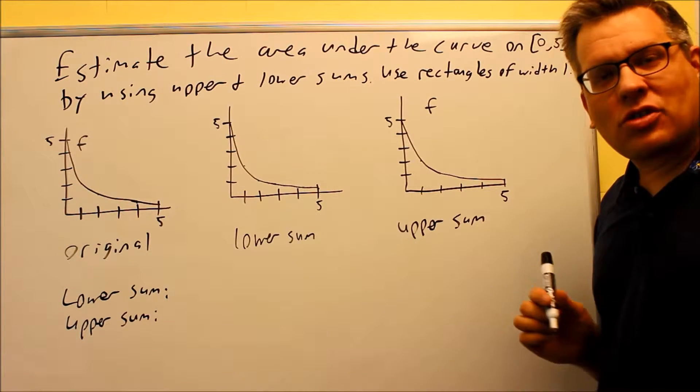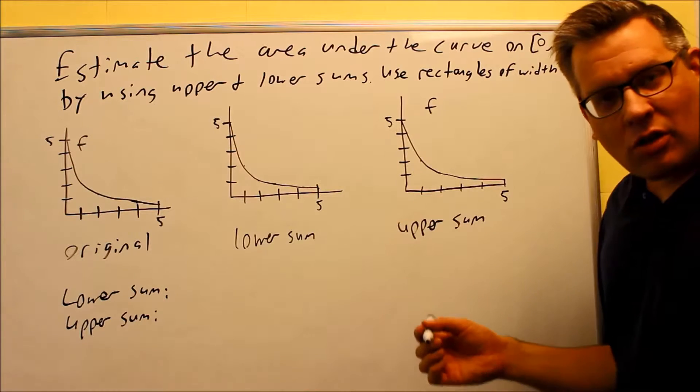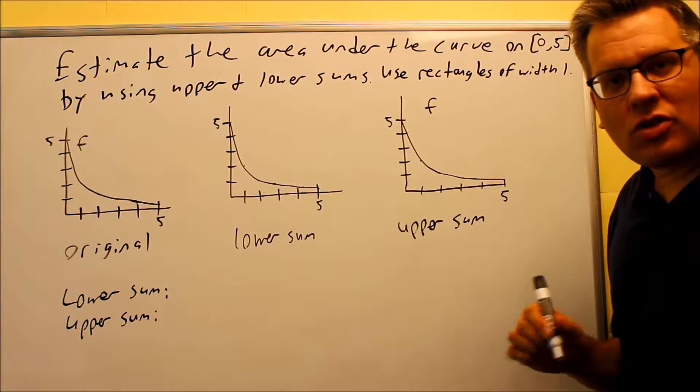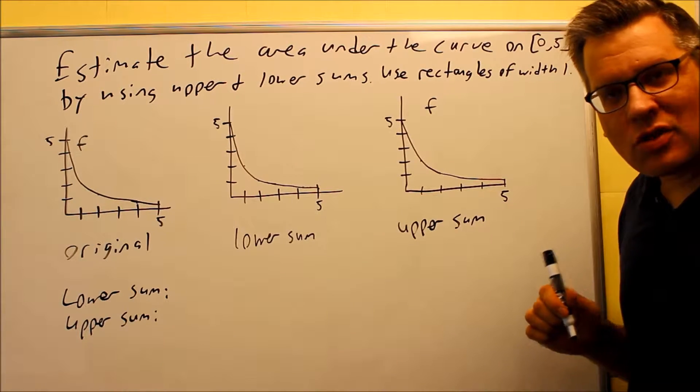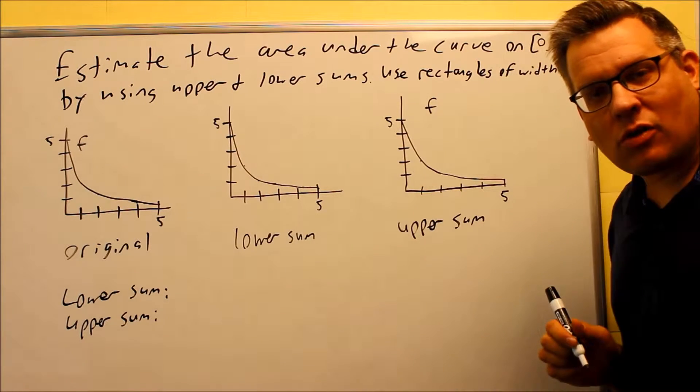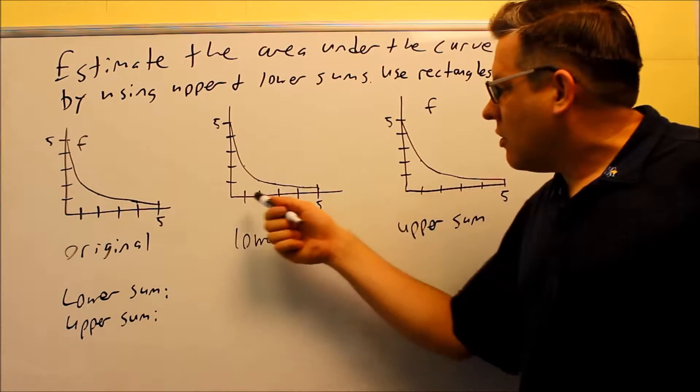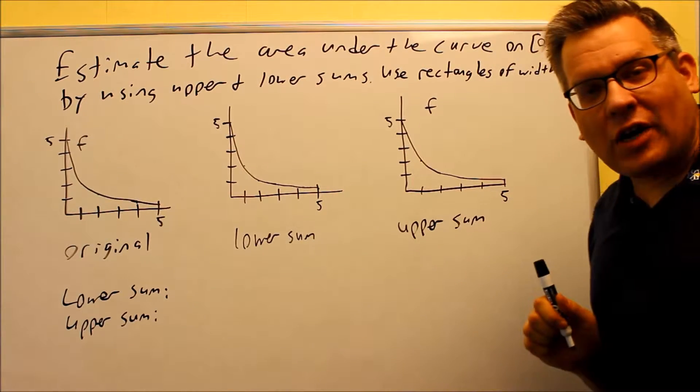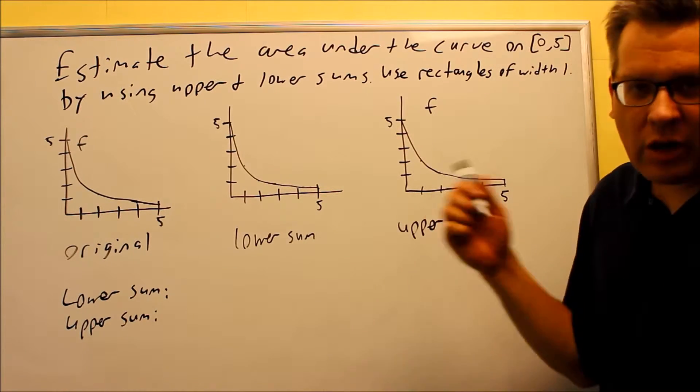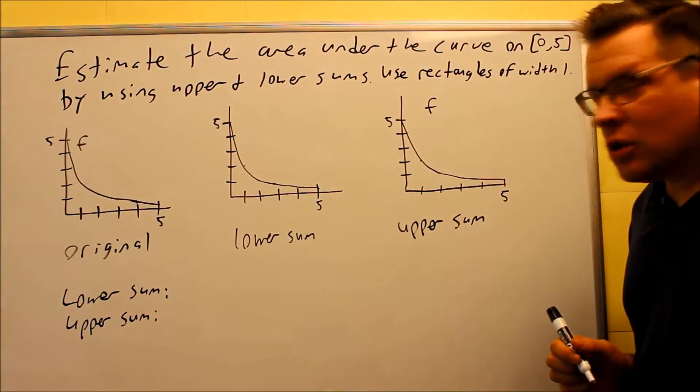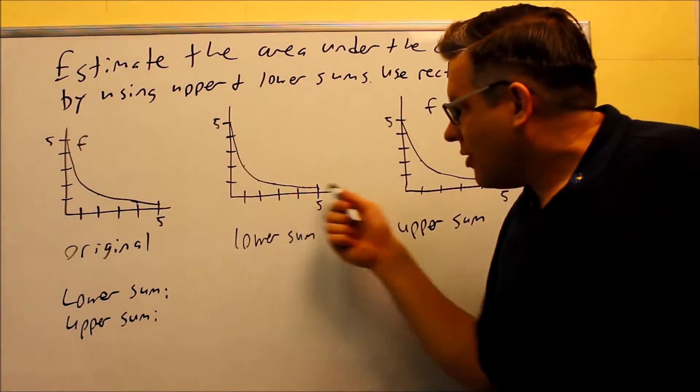So the problem in this section, they're going to tell you how many rectangles and the width, so pay close attention to the instructions because sometimes they'll tell you how many rectangles to use. In this case, if they said your interval is between 0 and 5 and they want you to use five rectangles, that would tell you the width is going to be 1, but they might tell you to use fewer rectangles.